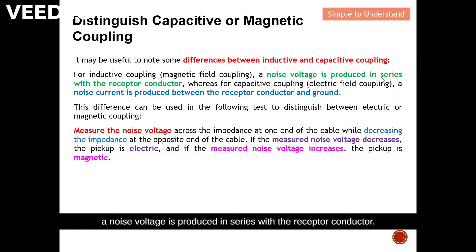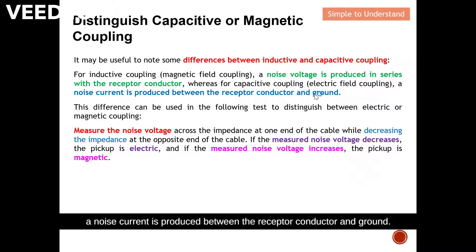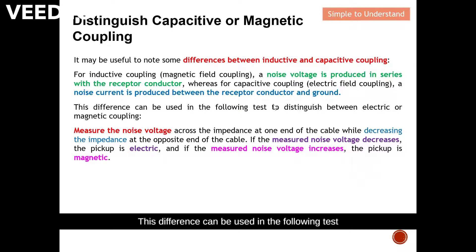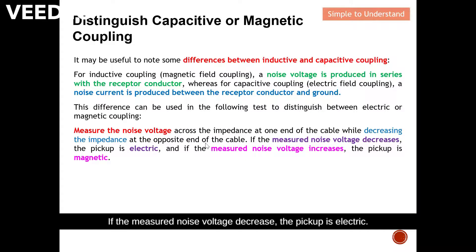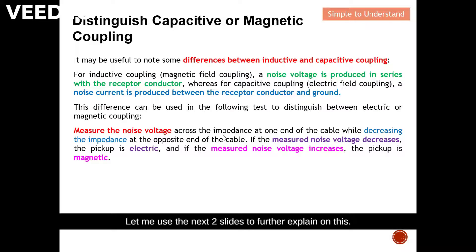For capacitive coupling, also known as electric field coupling, a noise current is produced between the receptor conductor and ground. This difference can be used in the following test to distinguish between electric or magnetic coupling. First, measure the noise voltage across the impedance at one end of the cable, while decreasing the impedance at the opposite end. If the measured voltage decreases, the pickup is electric. If the measured noise voltage increases, the pickup is magnetic.